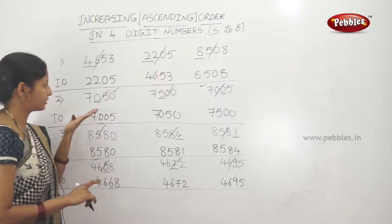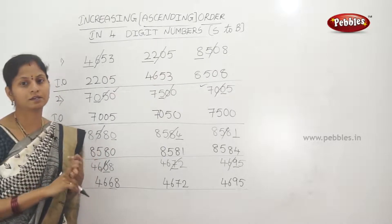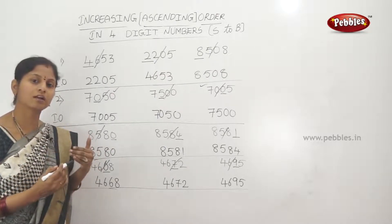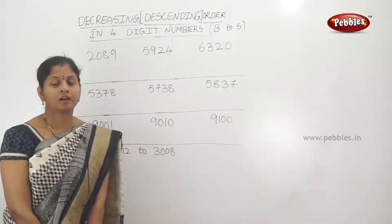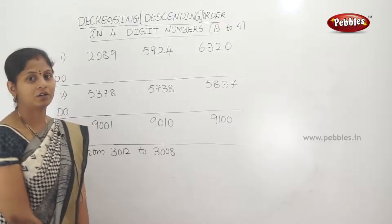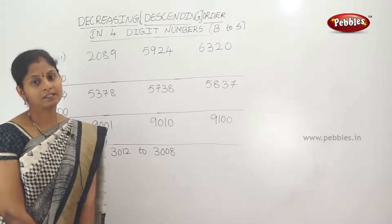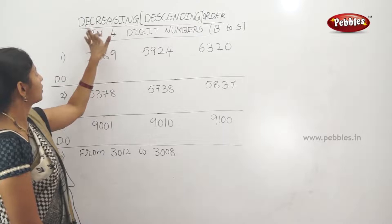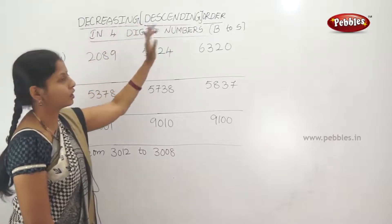The same comparison method applies for 2-digit, 3-digit, 4-digit, 5-digit, and 6-digit numbers — always start comparison from the first digit. Now we will look at descending order and decreasing order.